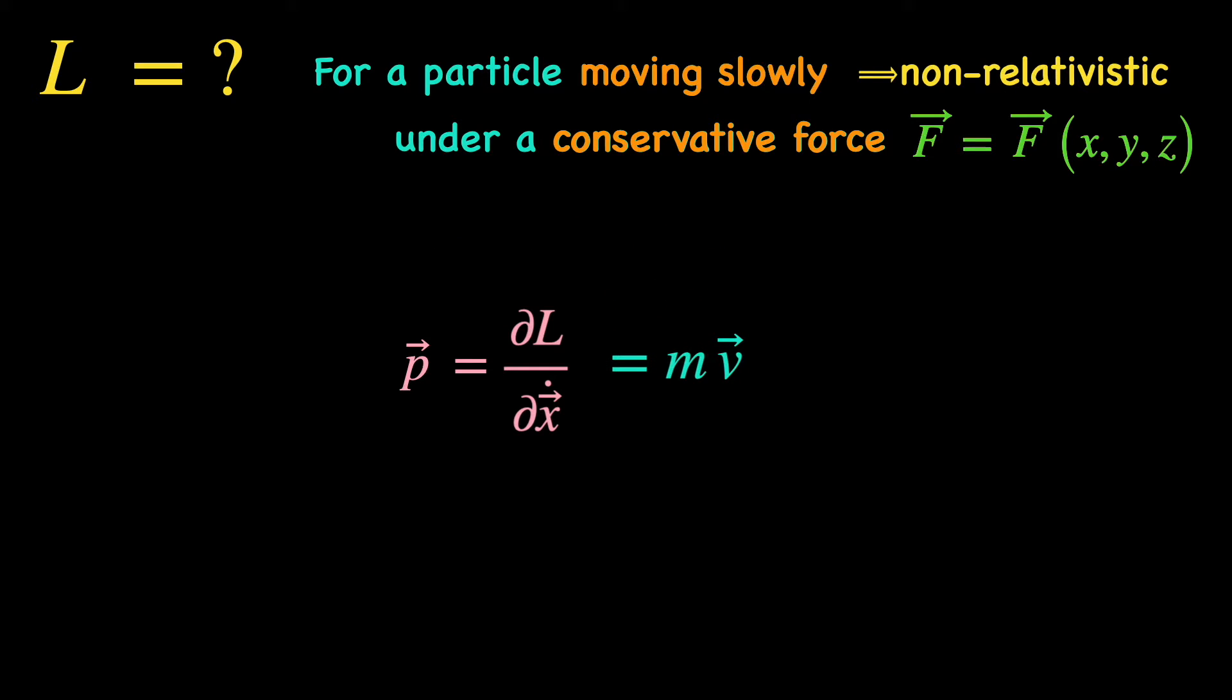It's obvious what we need to do, right? Since X dot and V are the same variable, we rewrite del L del X dot as del L del V and get the V dependence of the Lagrangian as integral of M V dotted with d V. So, we see that the velocity dependence of the Lagrangian for a non-relativistic particle is through its kinetic energy. We have already covered kinetic energy in an earlier video. The link is in the i button as always.